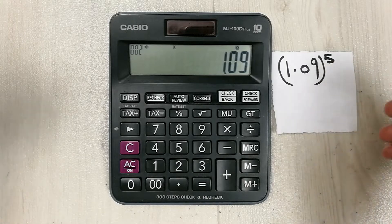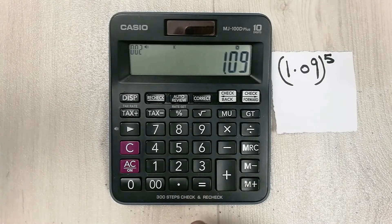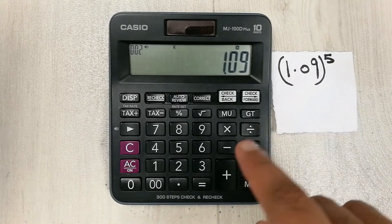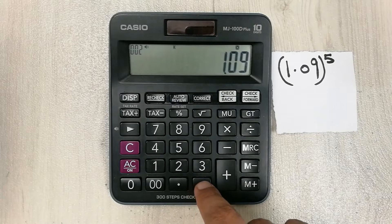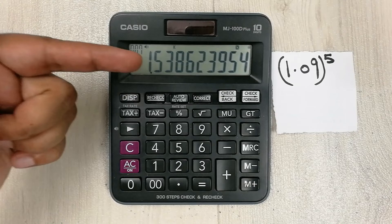Because here we have 5, so we press the equal button four times: 1, 2, 3, 4. So guys, this is our final answer.